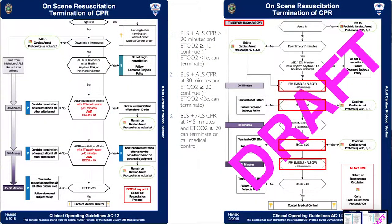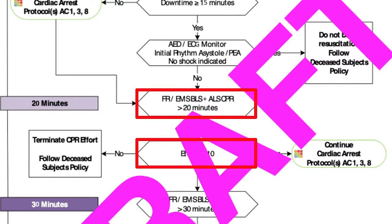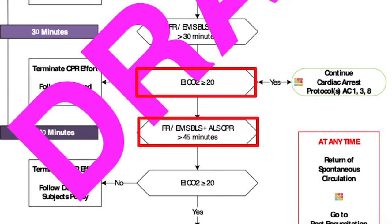On-scene resuscitation termination of CPR — also a big change. Time zero is going to start from BLS or ALS, so fire's time on scene counts toward overall time now. BLS plus ALS CPR greater than 20 minutes with an end-tidal CO2 greater than 10 — continue. If end-tidal is less than 10, stop. At 30 minutes, if end-tidal is less than 20, you can stop. If on scene greater than 45 minutes and end-tidal is still greater than 20, you can terminate or call med control at your discretion.